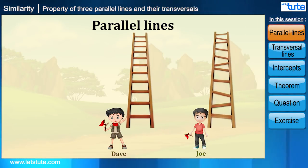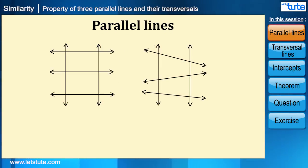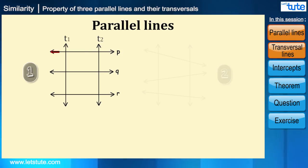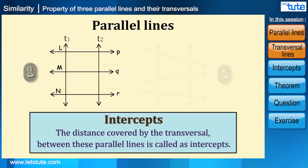Now in the case of Dave and Joe's ladder, let's take any three steps on a plane and label them P, Q, and R, and vertical lines, also known as transversal lines, as t1 and t2. In the first figure, parallel lines P, Q, and R intersect transversal lines t1 and t2. So let's say L, M, and N are points at which the transversal intersects the parallel lines. The distance covered by the transversal between these parallel lines is called intercepts.